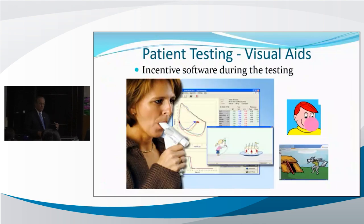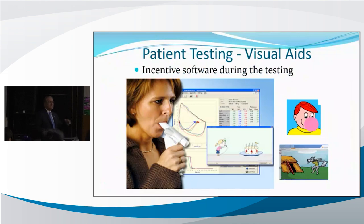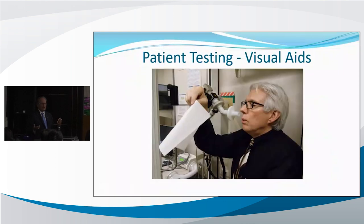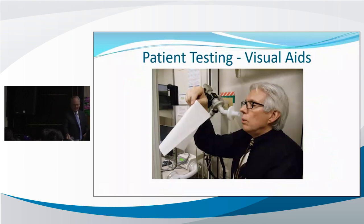Many spirometers have visual aids or incentives — where you're blowing out candles, blowing down a house, or something similar. These are often helpful with children. Most of the time you don't have to use them with adults, but they are available in most computerized spirometer systems. You can also use common visual aids like a Kleenex to demonstrate the difference between a weak and a strong blow.